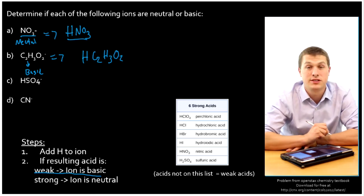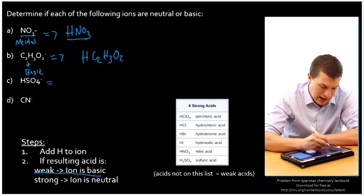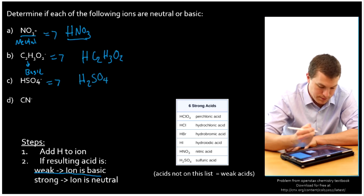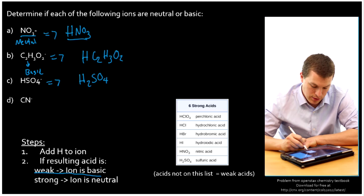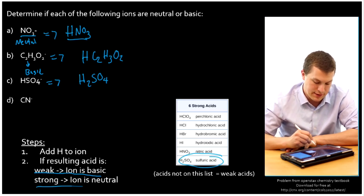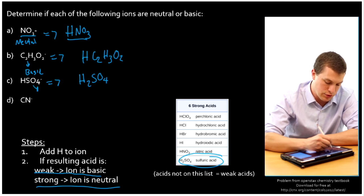Then we have HSO4 minus. If I add a hydrogen ion, that's going to become H2SO4. And H2SO4 is one of our strong acids. So that means that this ion is neutral.